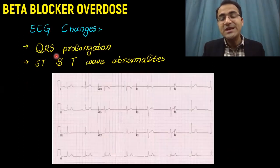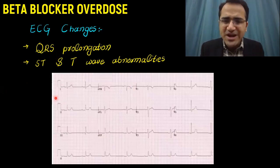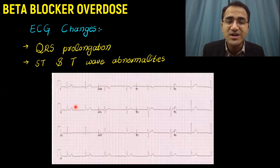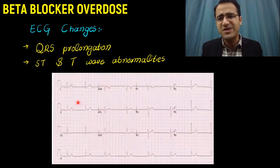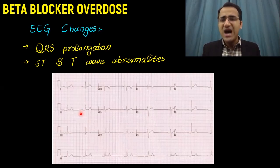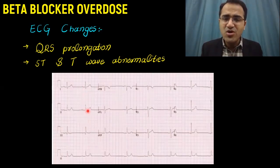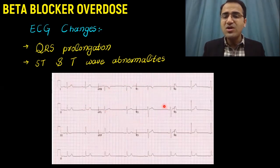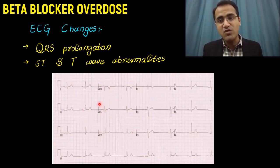ECG changes shown in beta blocker overdose include bradycardia. Look at the number of large boxes between each QRS complex. There are increased number of large boxes which show a very slow heart rate bradycardia, and P waves are present. So this is a sinus bradycardia. Other than that, there is QRS prolongation, and you can also appreciate T-wave abnormalities. These are all the findings in ECG when the patient has beta blocker overdose.